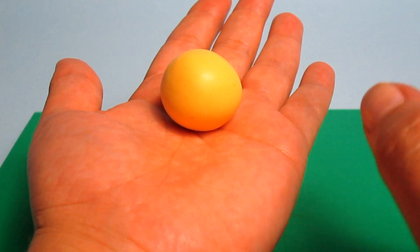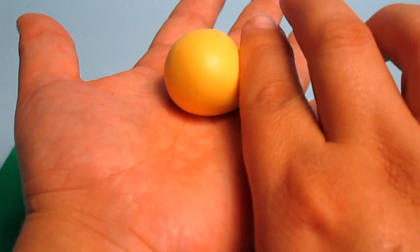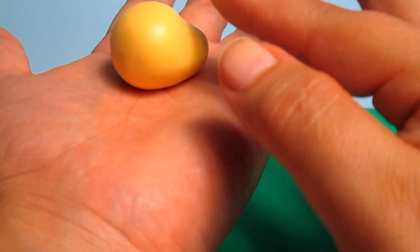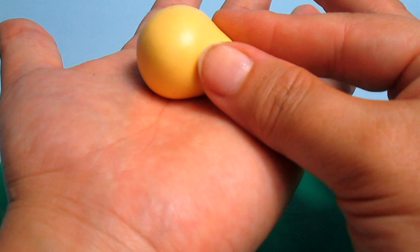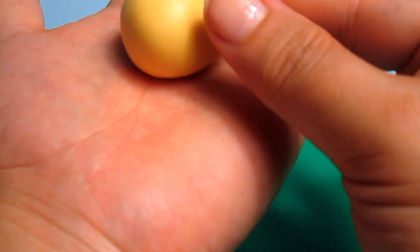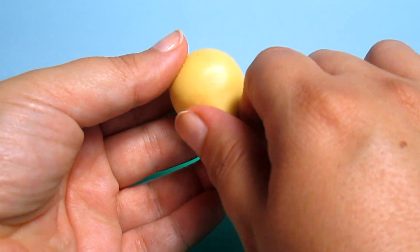So we roll a ball of light yellow fondant and what we're going to do is with our finger we have to roll one side of the ball. Now we have to pinch it and roll it again. So this is the mouth.